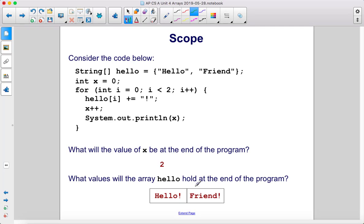What values will the array hello hold at the end of the program? Hello, friend, with exclamation marks. Because inside this same for loop, every time we go through it, we access a different element in this array and we add an exclamation point to the end.